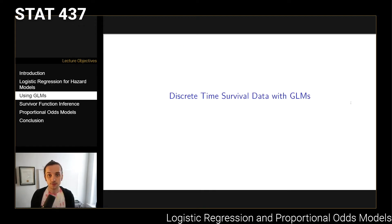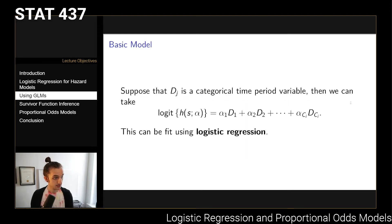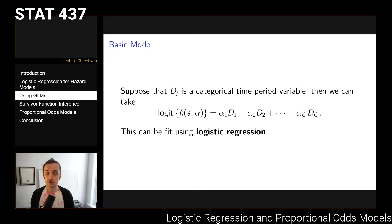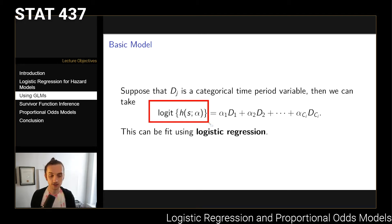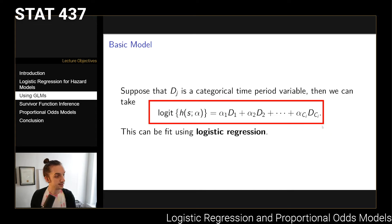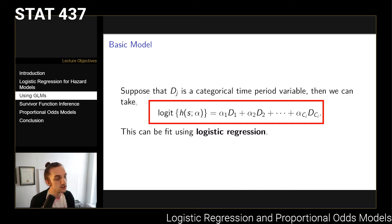So how can we fit discrete time survival data using GLMs? The essential premise is that we're going to take that parametric model for h to be a logistic regression model. If we take the logit of h to be this model, this is just a logistic regression model.